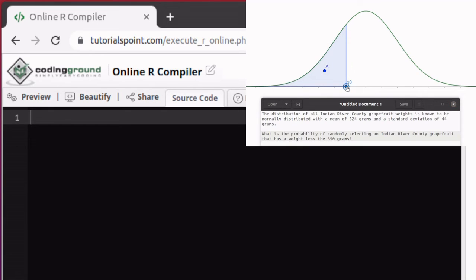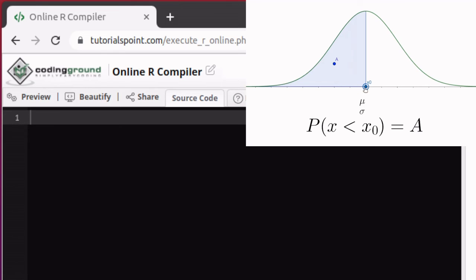Okay, so let's look at the picture for a minute. We know that 324 grams is right here in the middle, so at 350 grams we're up here somewhere. So we want to find this particular area when this value is 350.